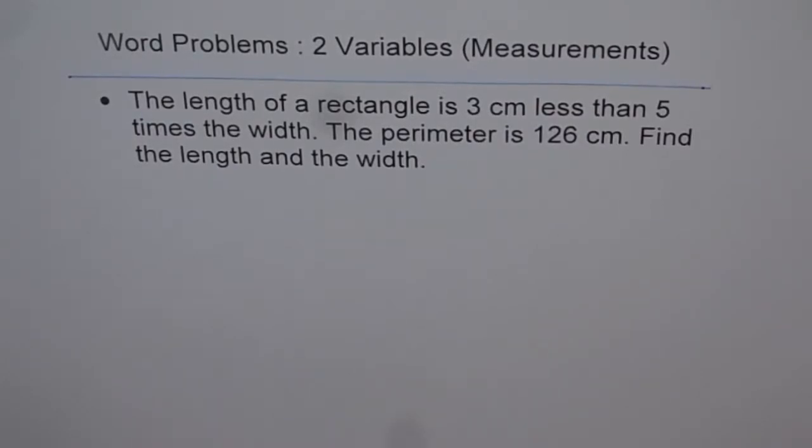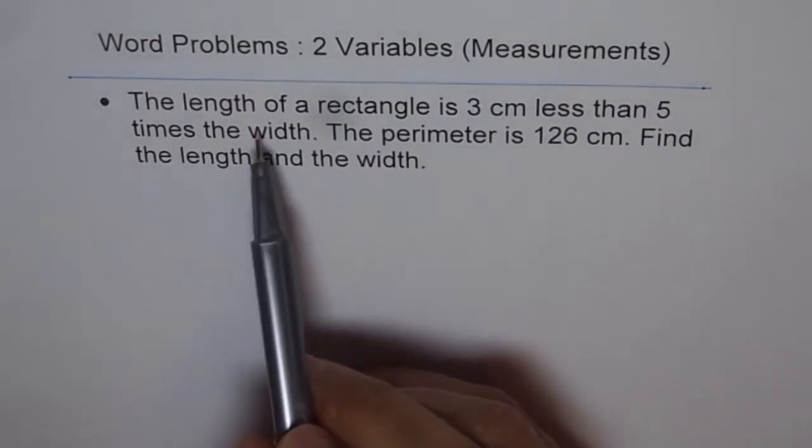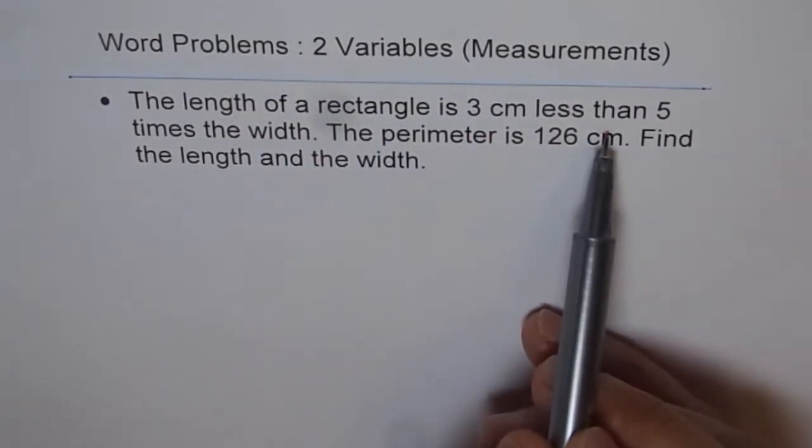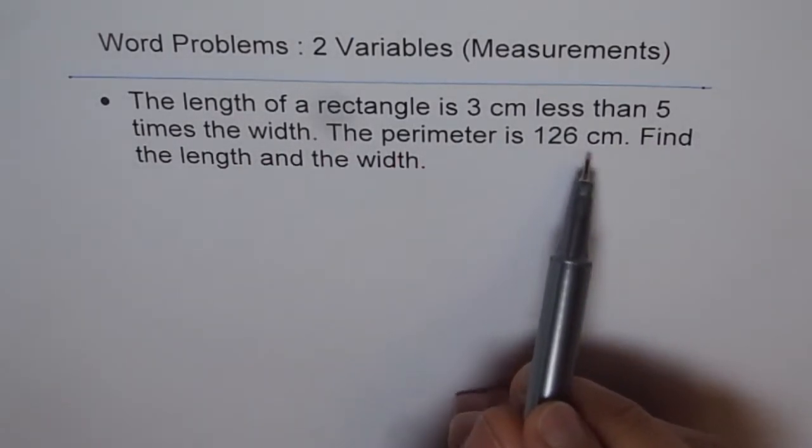Here is a word problem regarding geometric shapes. The length of a rectangle is 3 cm less than 5 times the width. The perimeter is 126 cm.